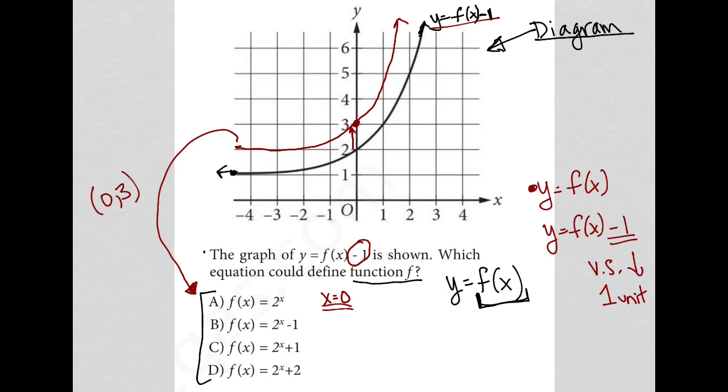So when I plug 0 in for choice A, 2 to the 0 is equal to 1. So that's not the correct answer. Choice B, when I plug a 0 in for x, I get 2 to the 0 equals 1. But then 1 minus 1 is 0. So that's not 3. That's not the 3 that I'm looking for.